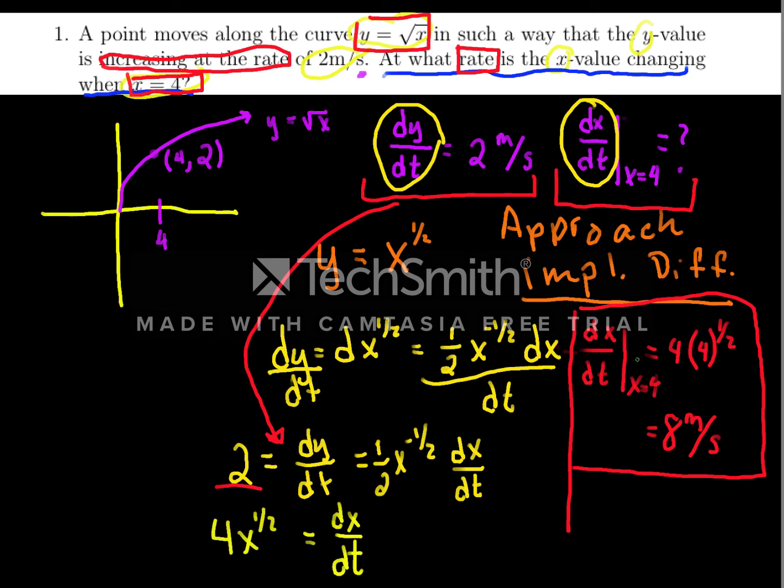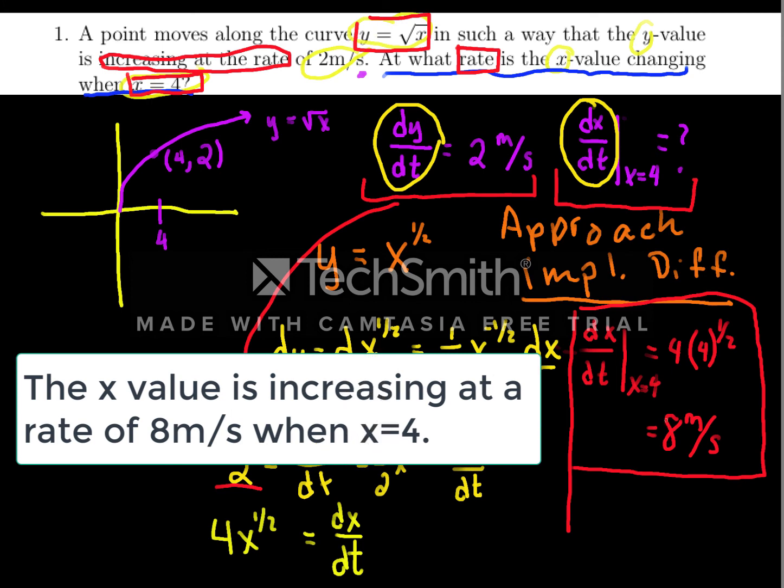Now, on homework or in an exam, I would ask that you write your answer out in a complete sentence. Because it's so slow and tedious for me to write it out here, I'm going to verbalize the answer. But again, what I would be looking for in an exam is that your final answer would be something like, the x value is changing or increasing at a rate of 8 meters per second when x equals 4. But again, I don't want to bore you with me writing that all out. So I'll say it verbally, but remember that you will want to write your answers in complete sentences.